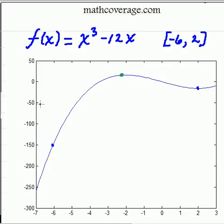That is the y value is larger than all the other y values between -6 and 2. And it looks like when x is equal to -6, you're going to have an absolute minimum.